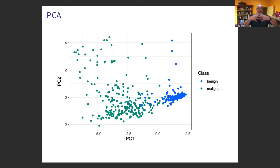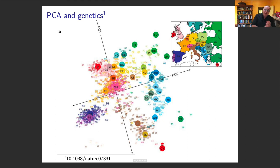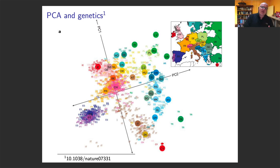Finally, a famous Nature paper: researchers took DNA samples from many people across Europe and performed principal component analysis on the genetic data. They plotted PC1 vs. PC2, and to their surprise the map of Europe appeared. Here is Portugal, here is Spain, going up you have France, then the UK, here is Ireland — it's a bit twisted but you can see that where you're from is encoded in your DNA at a deep level. That's principal components — next time we'll look at other unsupervised learning methods.